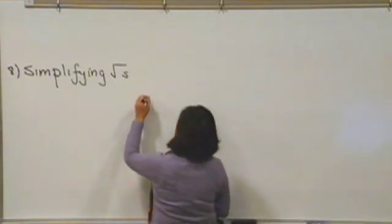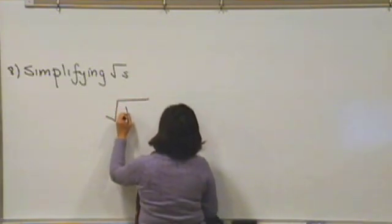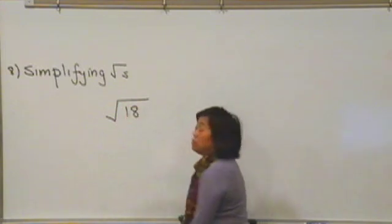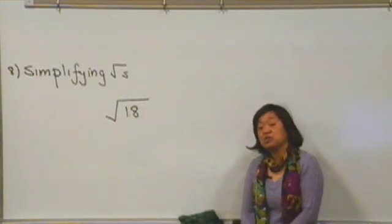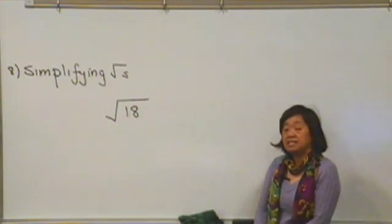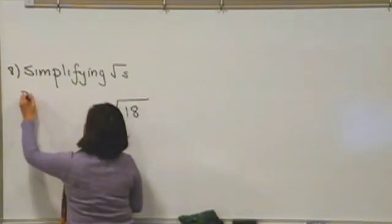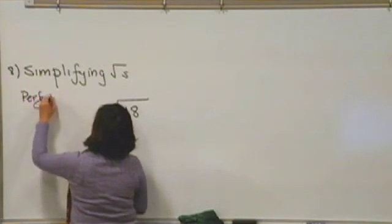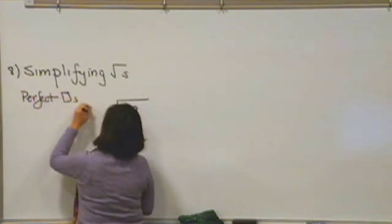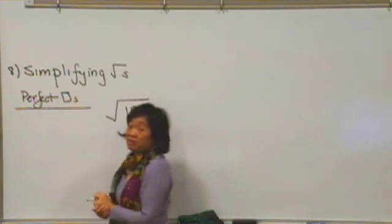Suppose we were asked to simplify the square root of 18. What we want to find are perfect squares that go into 18. Now, what are perfect squares?